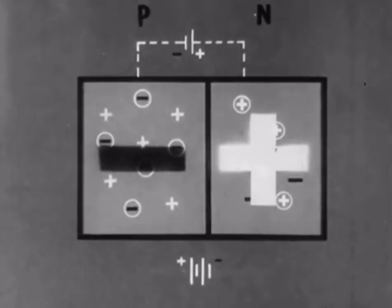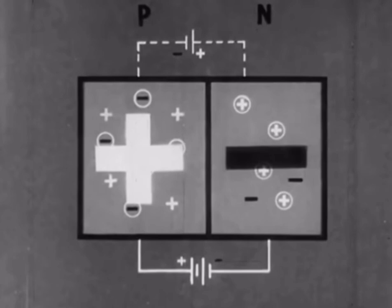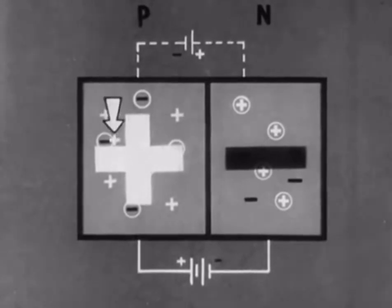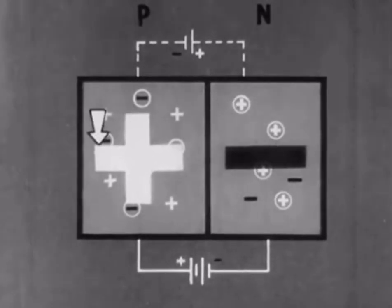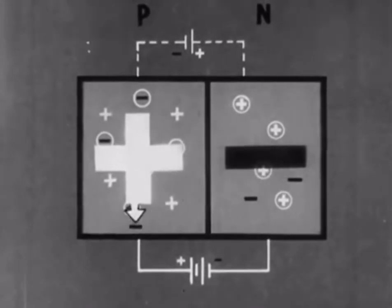Now watch what happens when we connect a real battery like this, with the positive pole connected to the P-type, and the negative pole to the N-type. The N-type germanium has now become negative with respect to the P-type germanium, and carriers can once more flow. Positive carriers to the N-type, and negative carriers to the P-type.